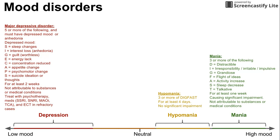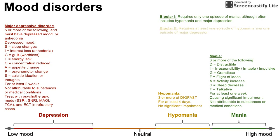The manic and hypomanic episodes fit into the bipolar diseases. There's bipolar 1 and bipolar 2. Bipolar 1 requires one episode of mania and does not require anything else, although it often includes episodes of hypomania and depression as well. Bipolar 2, on the other hand, requires at least one episode of hypomania and at least one episode of major depression, bouncing across the spectrum from hypomania to depression.